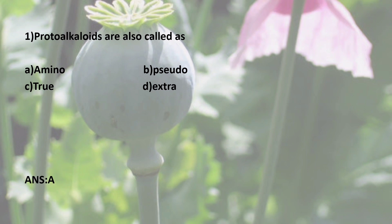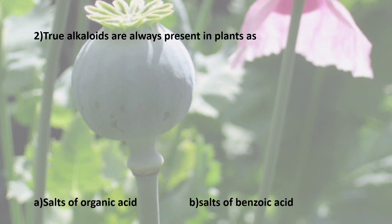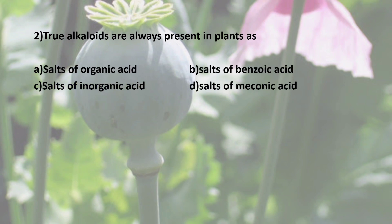Second question: True Alkaloids are always present in plants as? Options are: A) Salt of Organic Acid, B) Salt of Benzoic Acid, C) Salt of Inorganic Acid, D) Salt of Meconic Acid. The correct answer is A — True Alkaloids are present in plants as Salt of Organic Acid.